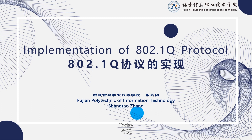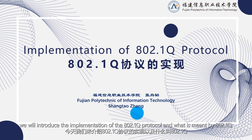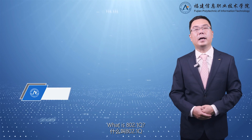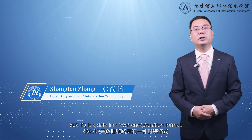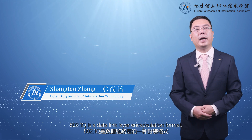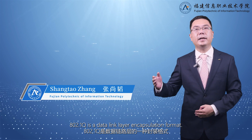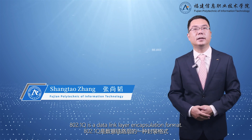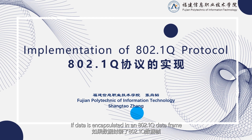Students, today we will introduce the implementation of the 802.1Q protocol and what is meant by 802.1Q. 802.1Q is a data link layer encapsulation format. If data is encapsulated in an 802.1Q data frame, it contains VLAN information.